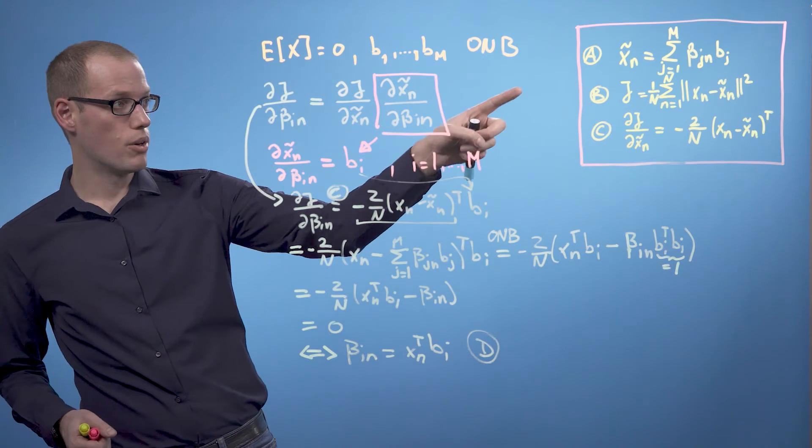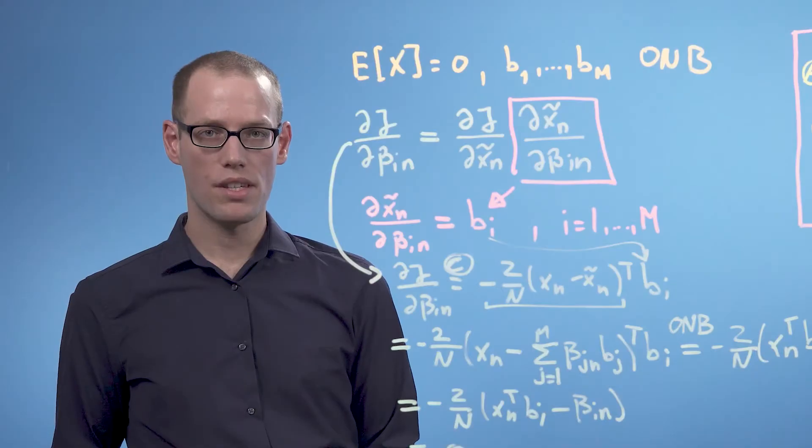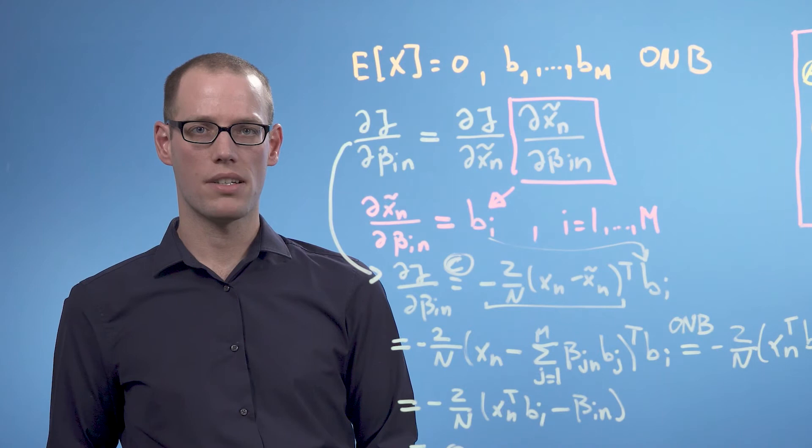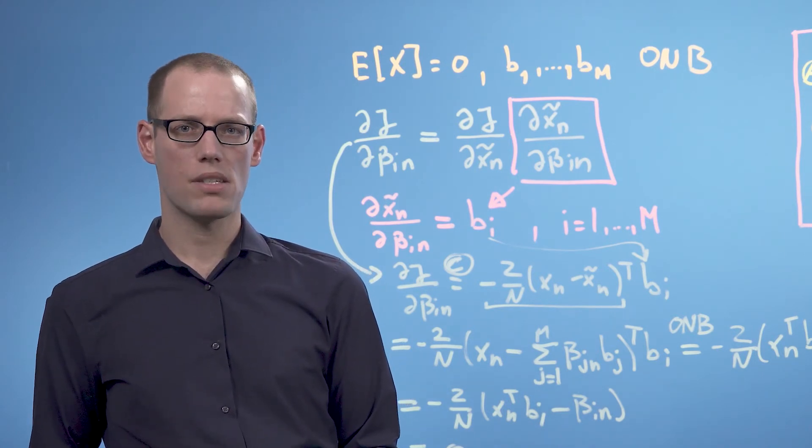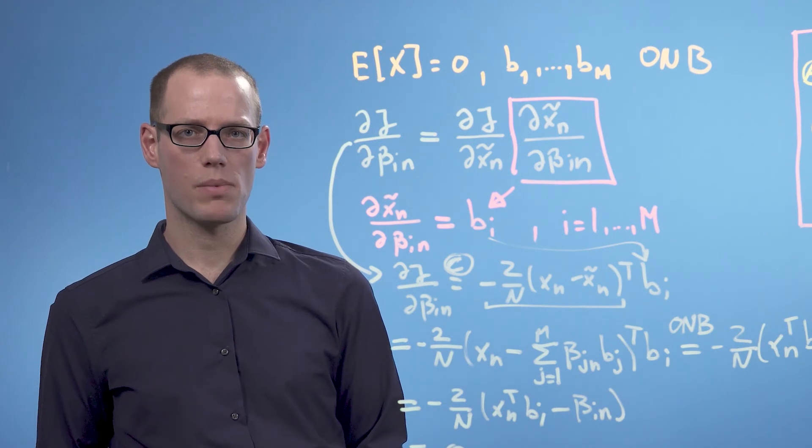In this video, we determine the coordinates of the lower dimensional data as the orthogonal projection of the original data onto the basis vectors that span the principal subspace.